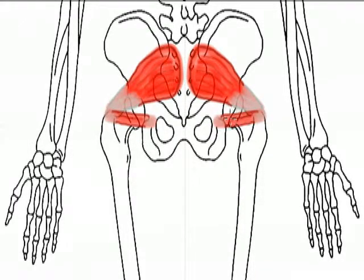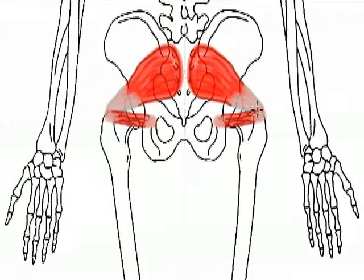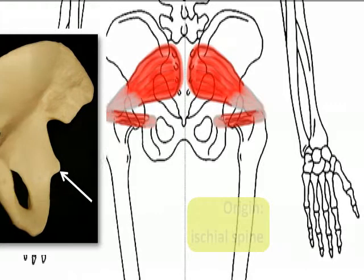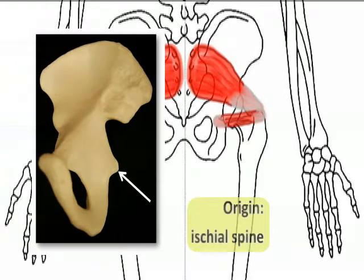The actions of the superior gemellus are the same as the other muscles in this set — thigh abduction and lateral rotation of the thigh at the hip joint. It also has the same insertion point on the greater trochanter of the femur, but it has a different origin point. It originates on the ischial spine of the coxal bone.